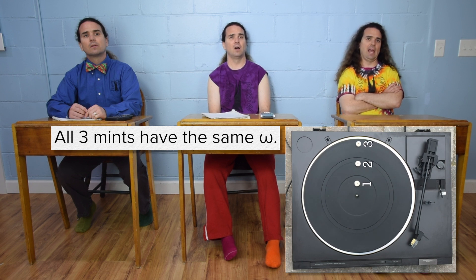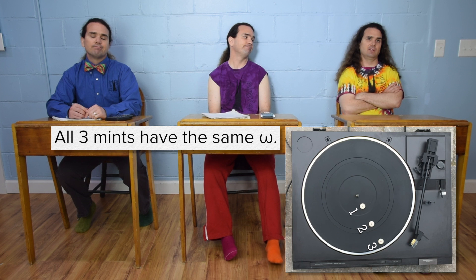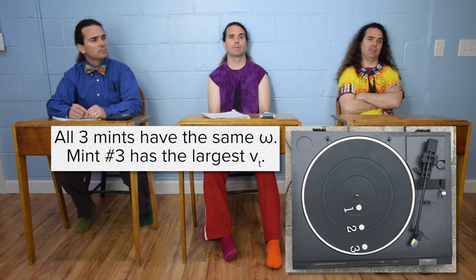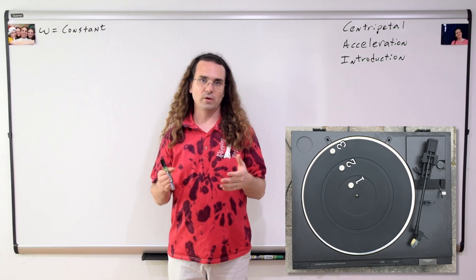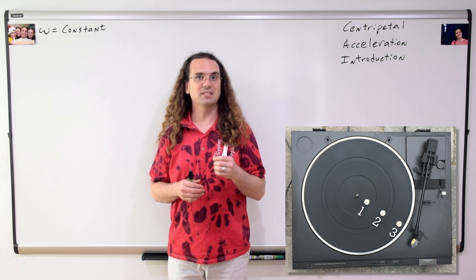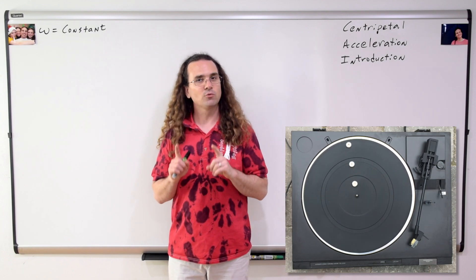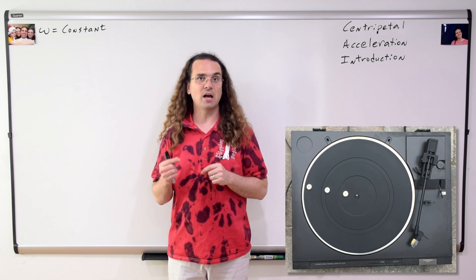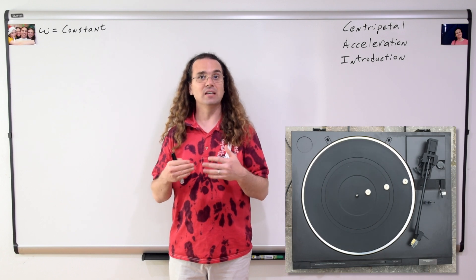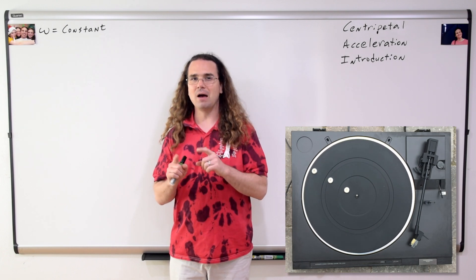I think I confused angular and tangential velocities. The third mint has the largest tangential velocity, but they all have the same angular velocity. We have established that all three mints have the same angular velocity, and the angular velocity of the turntable and the three mints is constant.